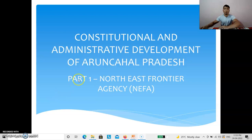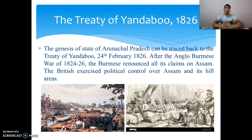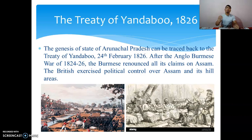The Treaty of Yandabu 1826. This treaty was signed after the Anglo-Burmese War of 1824 to 1826, in which the Burmese were defeated. As a result, the British had total political control over Assam.